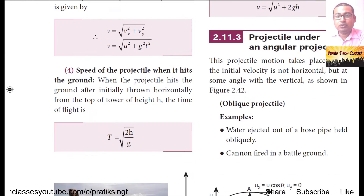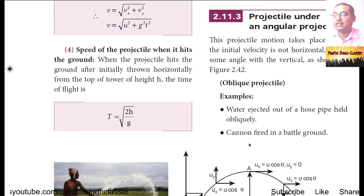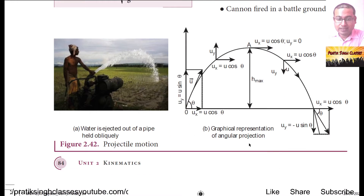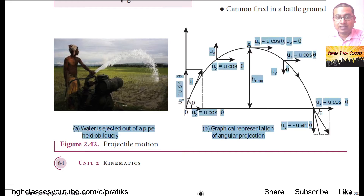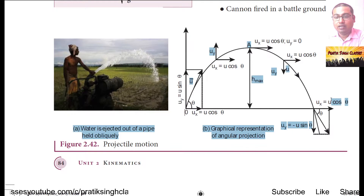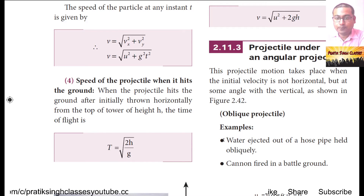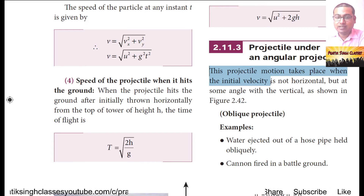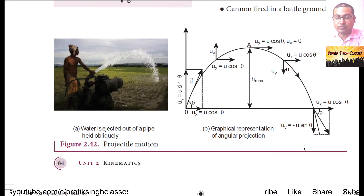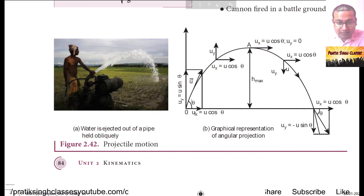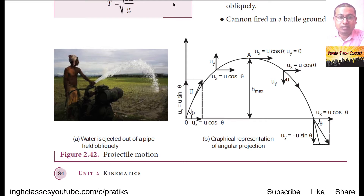Now we will start projectile under angular projection, meaning when the projectile is thrown at some angle with the horizontal line. As you can see in this figure, the projectile moves in a curved U-shape direction. This projectile motion takes place when the initial velocity is not horizontal but at some angle theta with the horizontal, or with the positive x-axis, as shown in the figure.